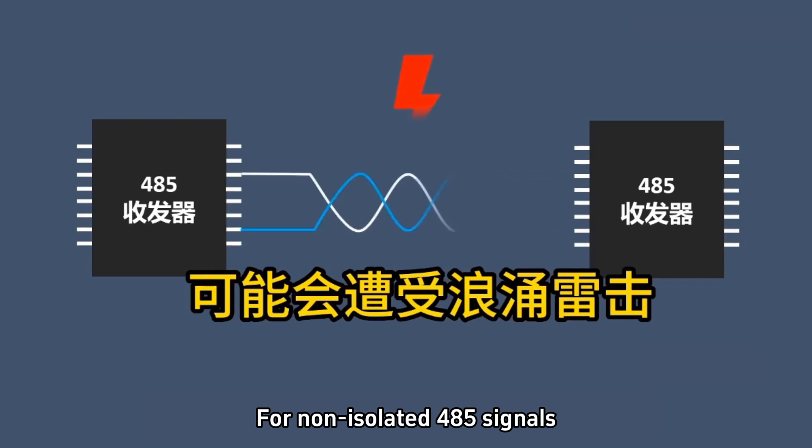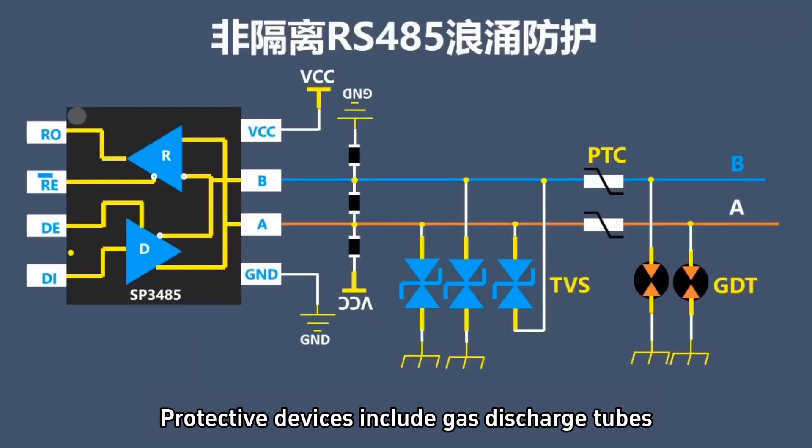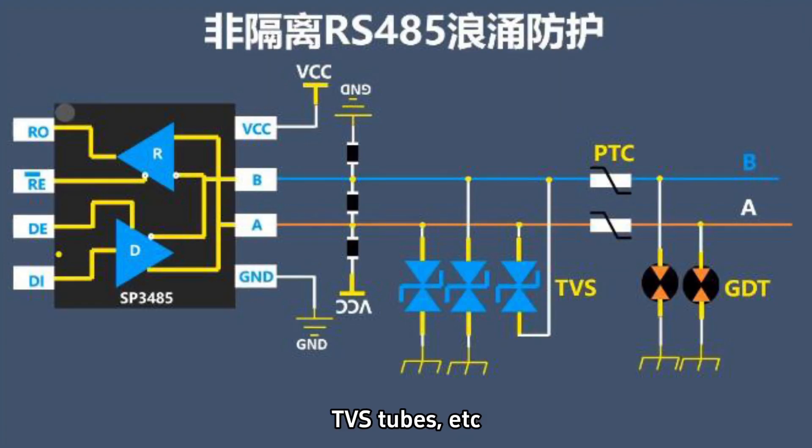For non-isolated 485 signals, the typical protective circuit is this one. Protective devices include gas discharge tubes, PTC self-recovery fuses, TVS tubes, etc.